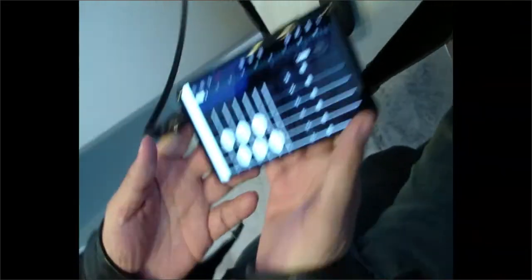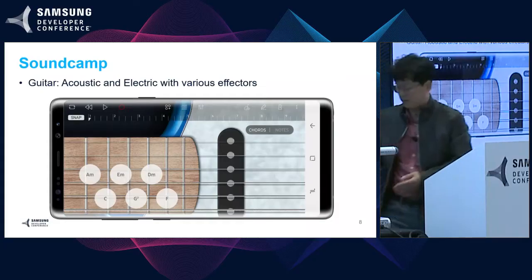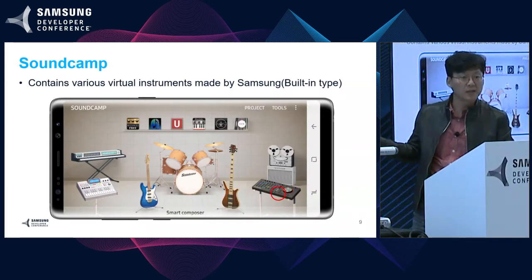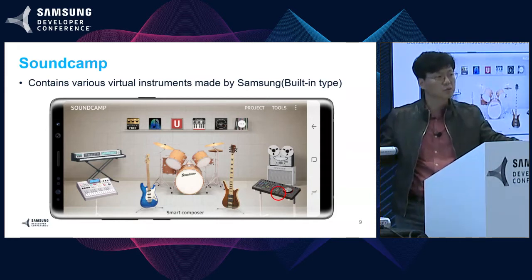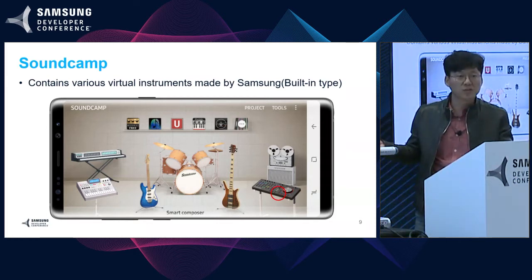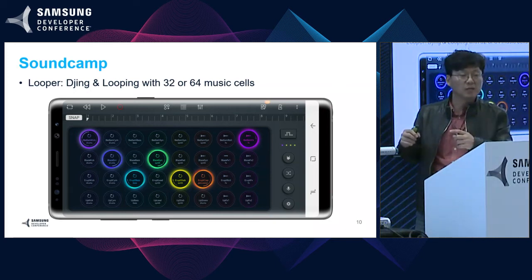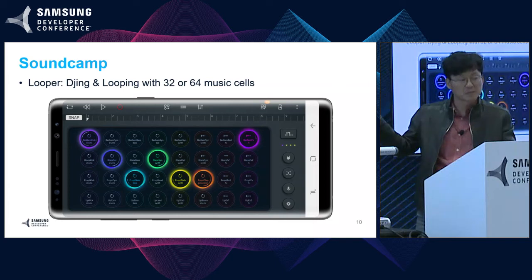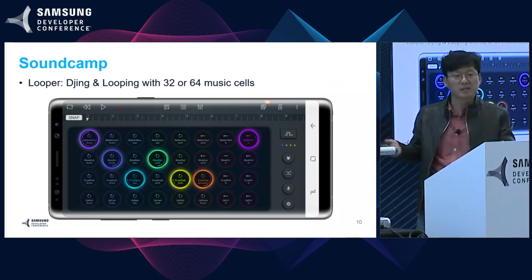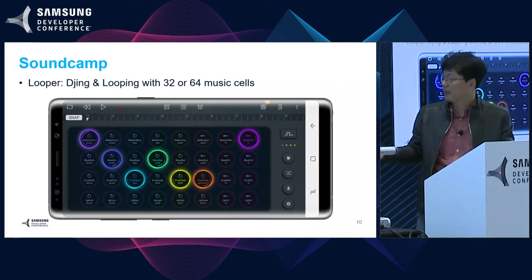It's very easy, right? Now I'll introduce another instrument. This is not a traditional music instrument, but a very unique digital instrument — we call it the looper. There are 32 icons, and each cell has its own loop sound. You just press the button if you want to play music, and we automatically synchronize all sounds from each cell. So you don't need to be concerned about synchronization of each beat or rhythm. It's very easy.